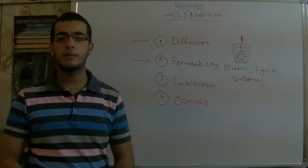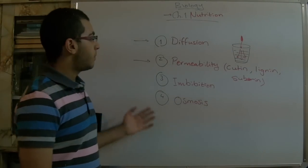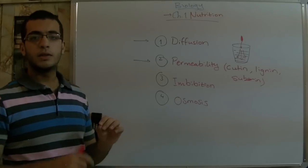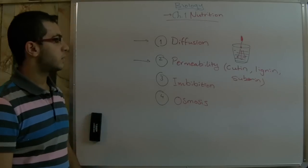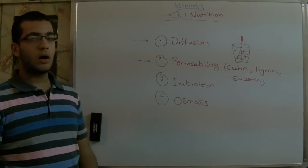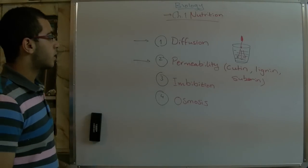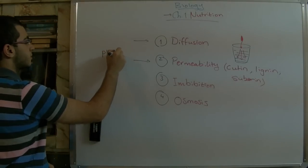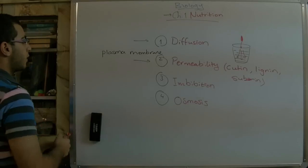For example, we have something called the plasma membrane, which surrounds the cell. It allows the passage of water and mineral salts because they are small molecules — this membrane contains holes through which water and mineral salts can pass. While it blocks the passage of sugar and amino acids because they are large-sized molecules. This phenomenon is called semipermeability, and this plasma membrane is called a semipermeable membrane.